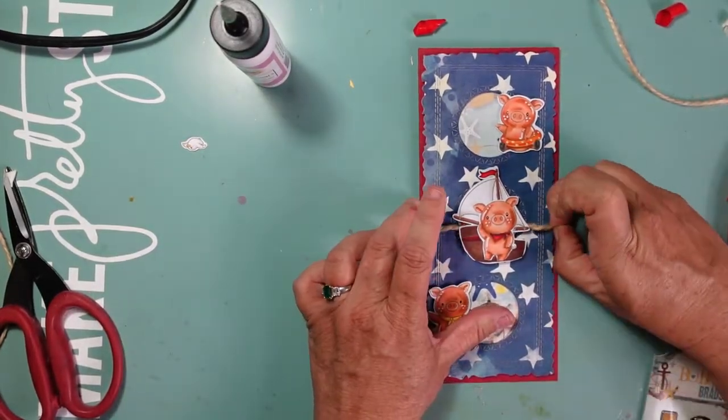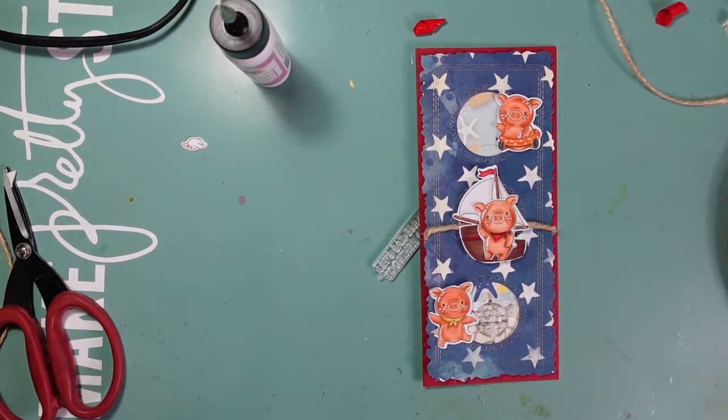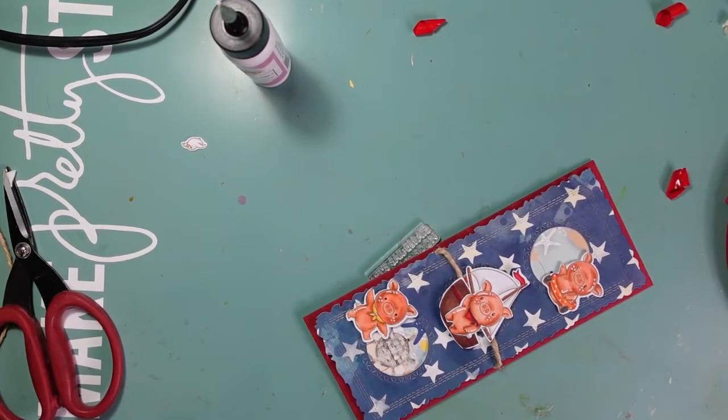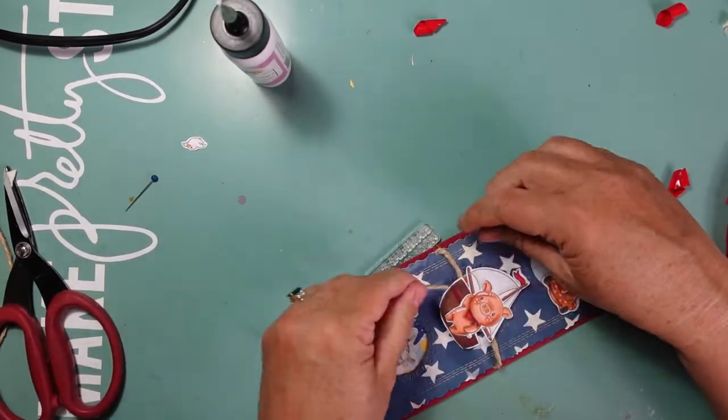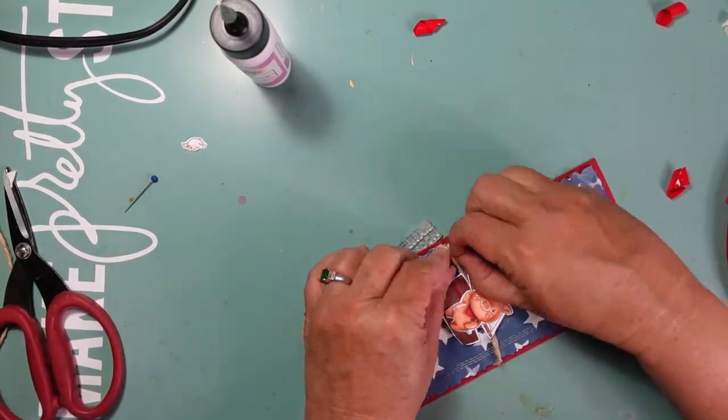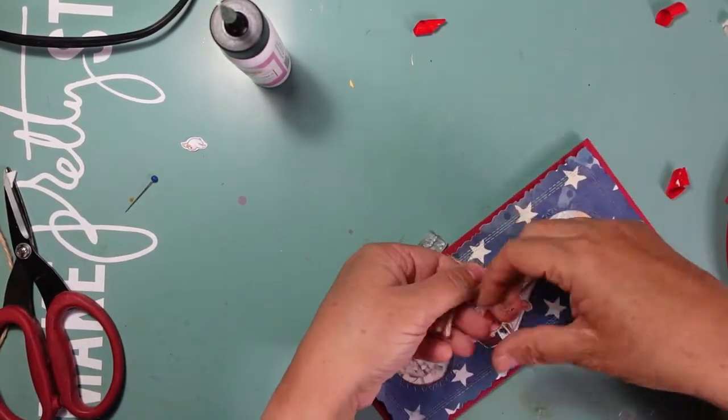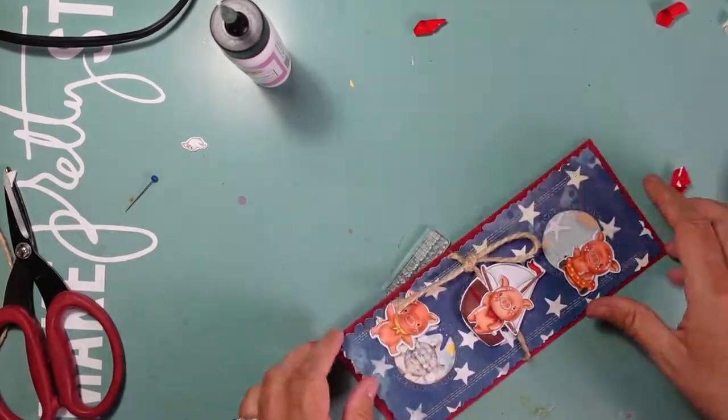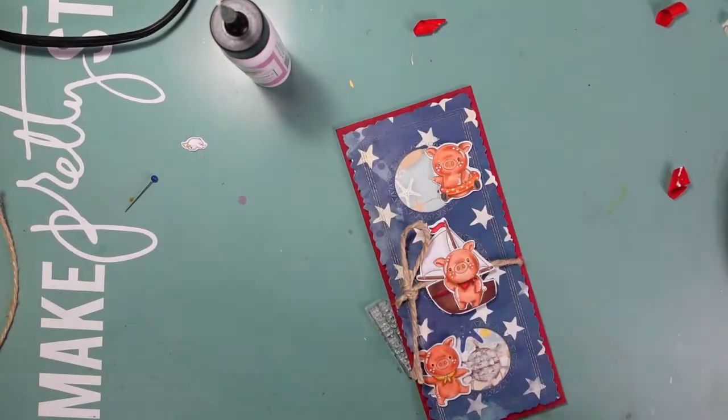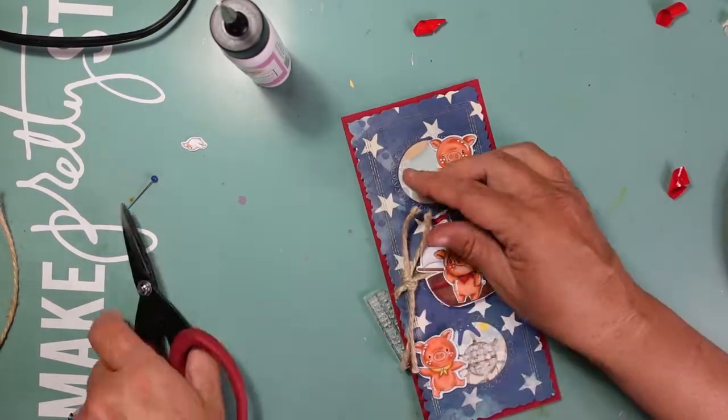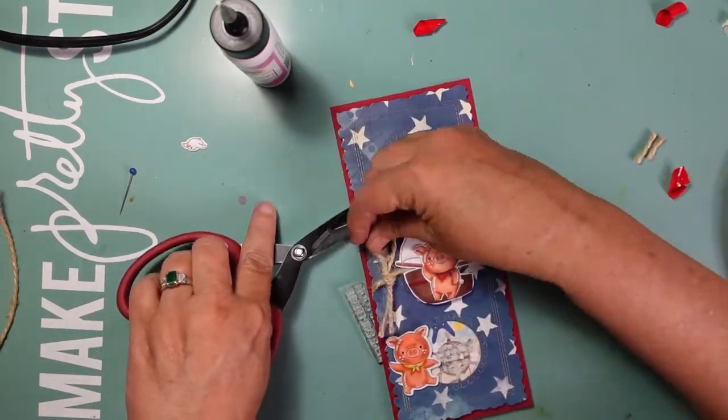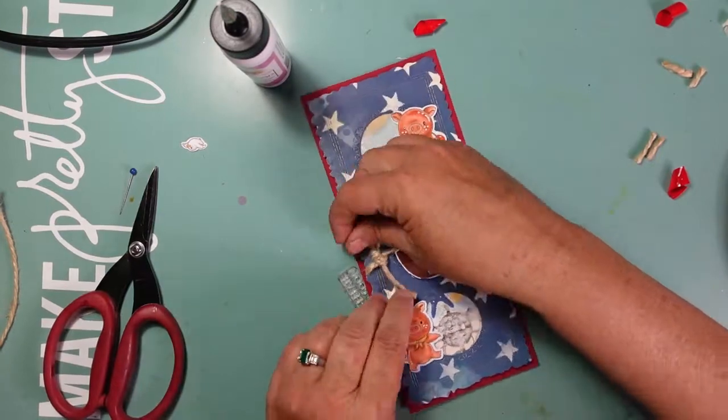We are going to be having a stamp and die of the month hop on the seventh. If you miss the hop on the first for the box of the month, please make sure that you enter for a chance to win a $25 gift card to the Not Too Shabby Shop by hopping along and leaving comments along the way. The stamp and die of the month is absolutely adorable, so I'm sure that you are going to be inspired by that hop as well.